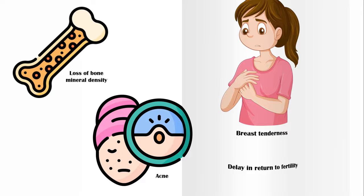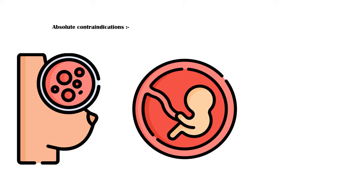Absolute contraindications for Depo-Provera include current breast cancer, pregnancy, and unexplained vaginal bleeding.